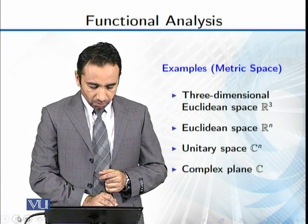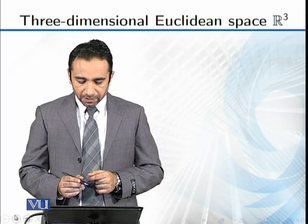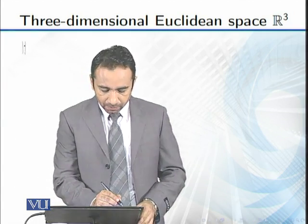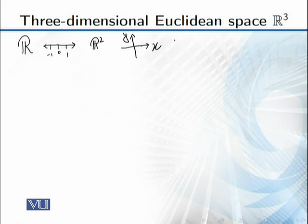Let's see the three-dimensional Euclidean space. If you have a simple R, you have a real line. Then if we talk about R², it is the two-dimensional plane — you have an x-axis, y-axis, and so on. Now R³ is three-dimensional, and the elements are of the form x, y, z.